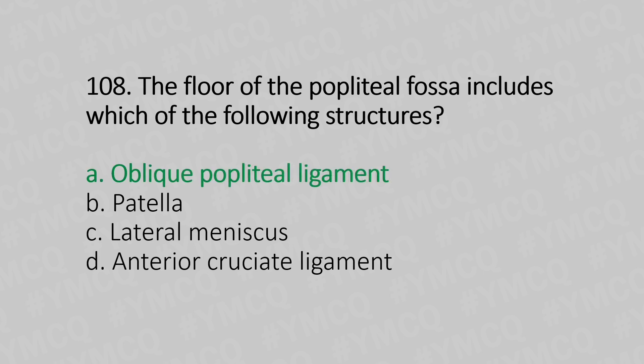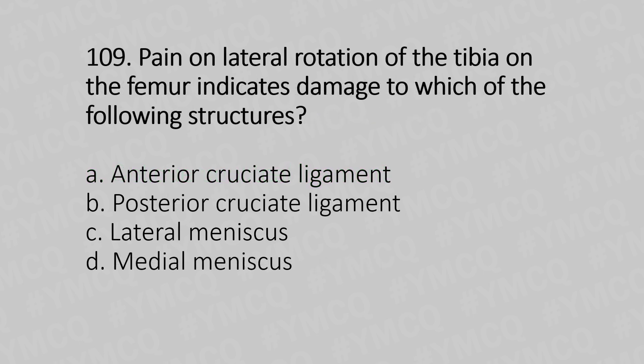Now let's move to question number 109. Pain on the lateral rotation of the tibia on the femur indicates damage of which of the following structures? Option A, anterior cruciate ligament. Option B, posterior cruciate ligament. Option C, lateral meniscus. Option D, medial meniscus. And the answer is Option C, lateral meniscus.